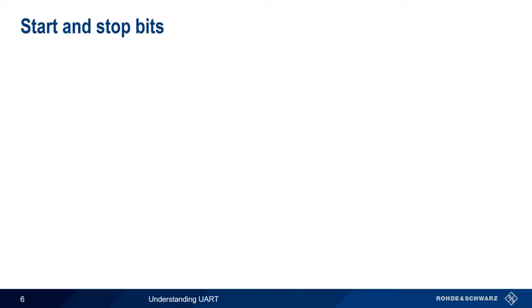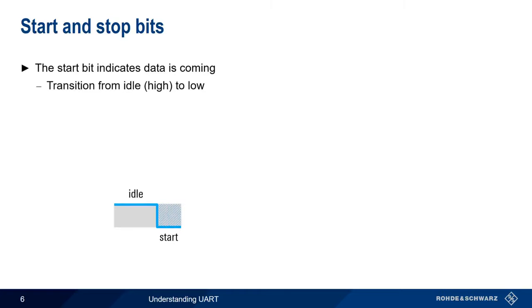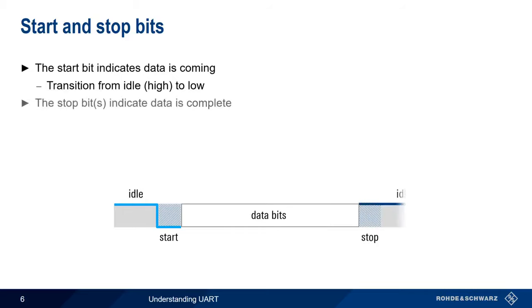Because UART is asynchronous, the transmitter needs some way to signal that data bits are coming, and this is accomplished using the start bit. The start bit is essentially nothing more than a transition from the idle high state to a low state, and user data bits come immediately after the start bit. After the data bits are finished, the stop bit indicates the end of user data. The stop bit is either a transition back to the high or idle state, or remaining at the high state for an additional bit time. A second optional stop bit can be configured, usually to give the receiver time to get ready for the next frame, but this is uncommon in practice.